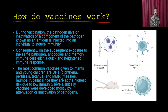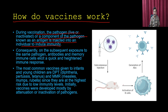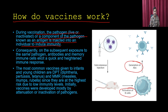During vaccination, the pathogen — live, inactivated, or a component known as an antigen — is injected into an individual to induce immunity. This activates B cells, which produce antibodies providing protection and memory against the antigen. Subsequent exposure to the same pathogen triggers a quick and heightened immune response. Common vaccines given to infants include DPT against diphtheria, pertussis and tetanus, and MMR for measles, mumps and rubella.